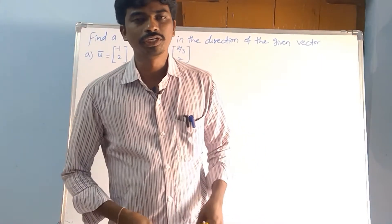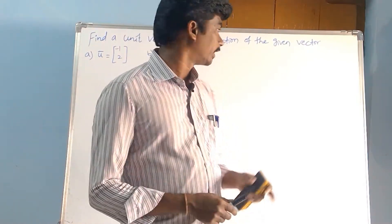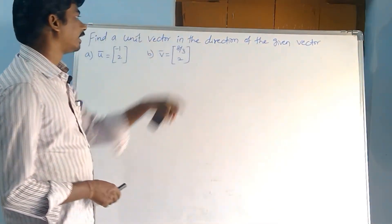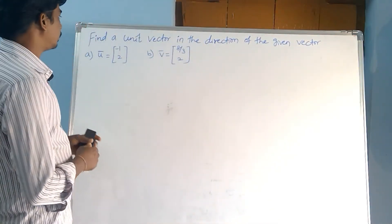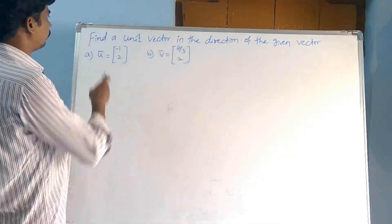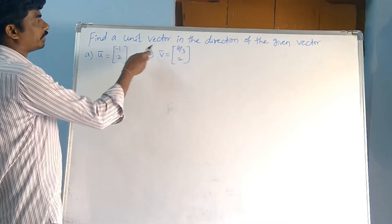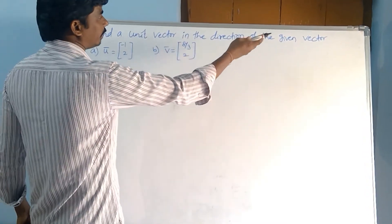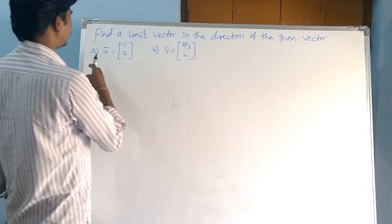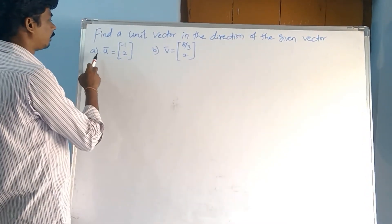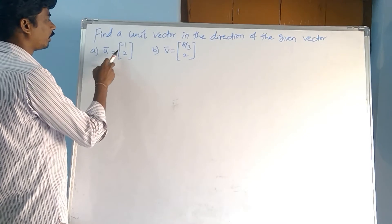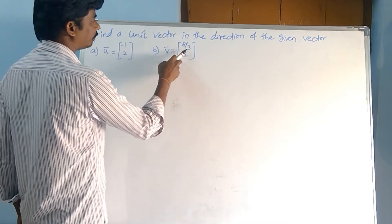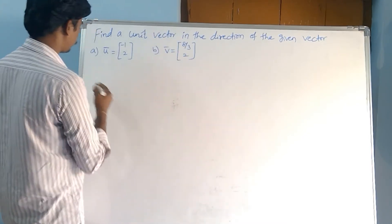Welcome to Roger's Vector. Today our topic is unit vector in the direction. Find a unit vector in the direction of the given vector. u̅ equals (-1, 2), v̅ equals (8/3, 2).